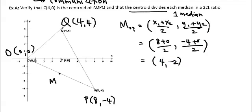So 8 plus 0 over 2 is 4, and negative 4 over 2 is negative 2. So that gives me my M. And I want to do this median right here, so I'll do my best to have a straight line. If you have a ruler, it's better.